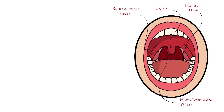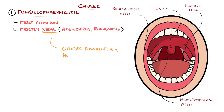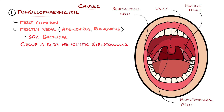Tonsillopharyngitis is predominantly caused by common cold viruses like rhinovirus and adenovirus, but can be due to others too like herpes simplex and HIV. Around 30% of cases are caused by bacteria, the most common being group A beta-hemolytic streptococcus like Streptococcus pyogenes, which is why these are sometimes called strep throat.